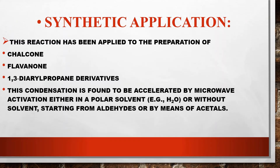Now, synthetic applications: this reaction has been applied to the preparation of chalcone, flavanone, and 1,3-diaryl propane derivatives। Claisen-Schmidt के through chalcone, flavanone, और 1,3-diaryl propane derivatives का formation कर सकते हैं — और chalcone बहुत ही useful compounds हैं। Additionally, this condensation is found to be accelerated by microwave activation either in a polar solvent (example: water) or without solvent, starting from aldehydes or by means of acetal। These are the synthetic applications of Claisen-Schmidt reaction। Thank you।